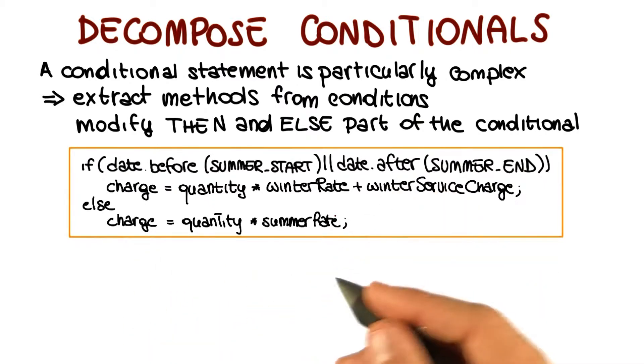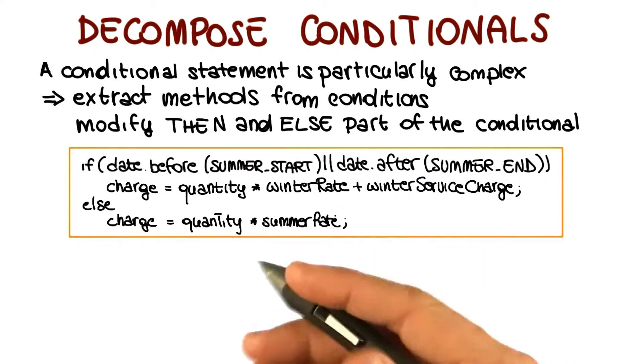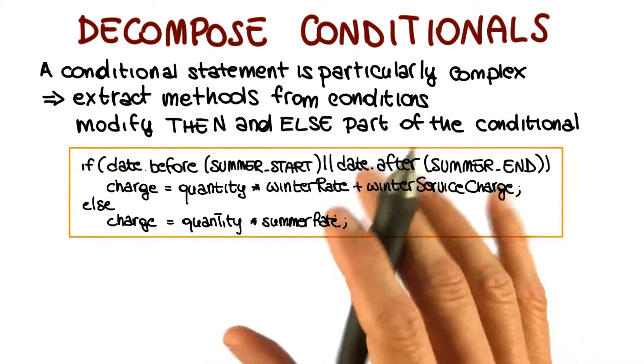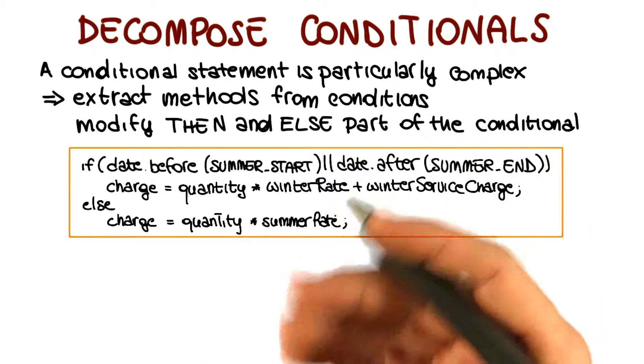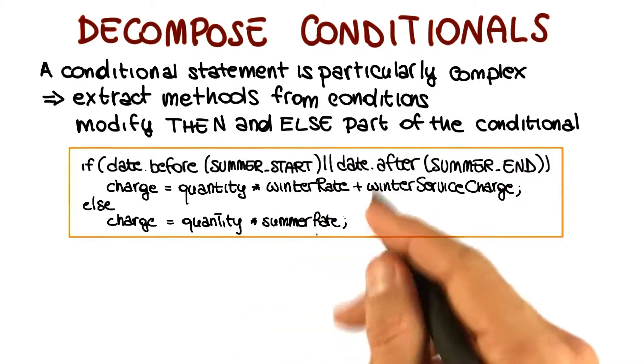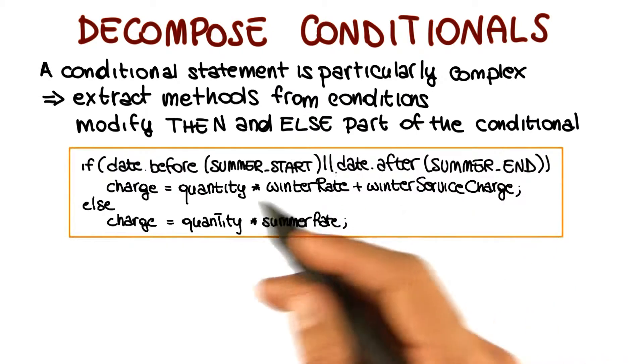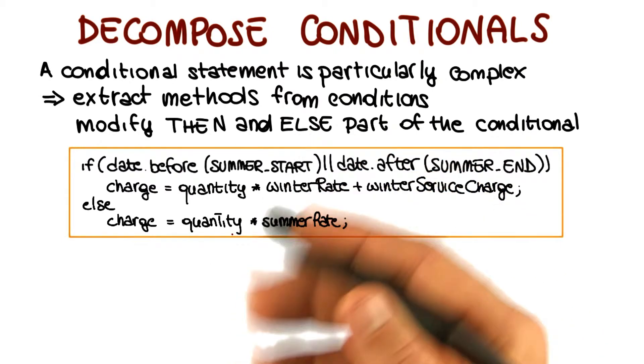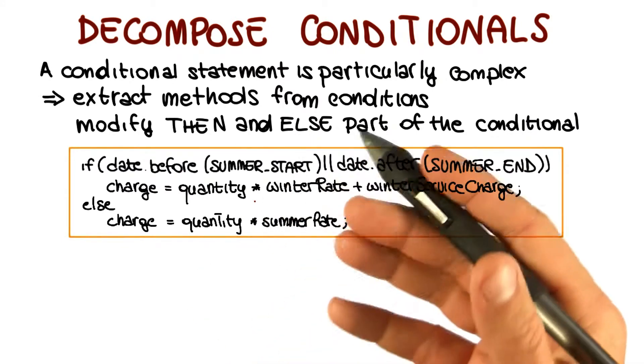And this is just a small example, so it might not look that complex, but just project this on more realistic code, on larger code, you can end up with conditions that are hard to understand. And even in this case, even such a small piece of code, you have to look at the conditions, figure out what does it mean for the day to be before the summer start and after the summer end. We can make this much clearer.